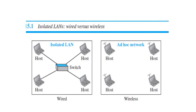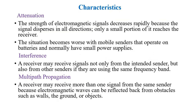Each host itself will be transmitting data by having an access point. Now we can see the characteristics of the wireless LAN. The first is attenuation — loss of signal — where the strength of the electromagnetic signal decreases rapidly due to signal degradation. Interference also occurs when the receiver receives signals not only from the intended sender but also from other sources, especially when using the same frequency band.